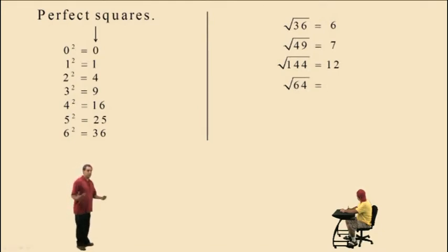Square root of 64, what number do you square to get 64? It's 8. 8 squared is 64. Square root of 100 is 10 because 10 squared is 100.